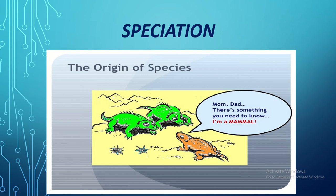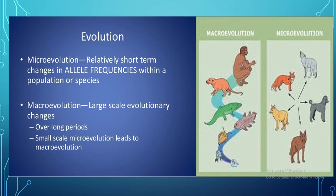Today's topic is speciation — the process of formation or origin of new species. Every new species is born through the process of evolution. There are two types of evolution: microevolution and macroevolution. Microevolution occurs over relatively short time periods as short-term changes in allele frequencies within a population, for example, different breeds of dogs arising from slight genetic changes within the same population — different fur color, eye color, or other features.